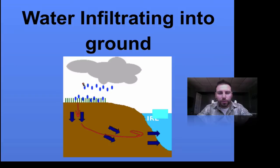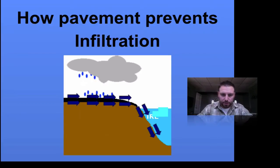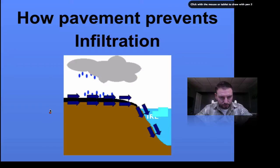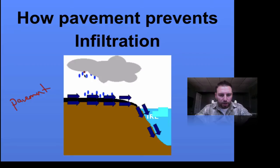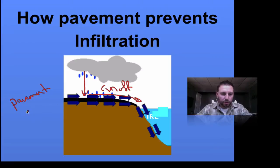If we replace that vegetation with pavement like we see here — a parking lot or a road — the water hits the surface and will become runoff. So pavement decreases infiltration.